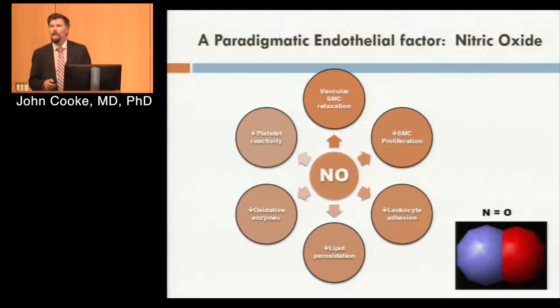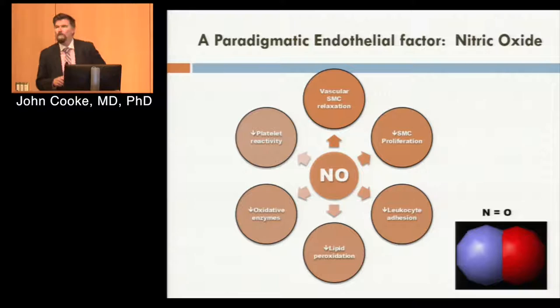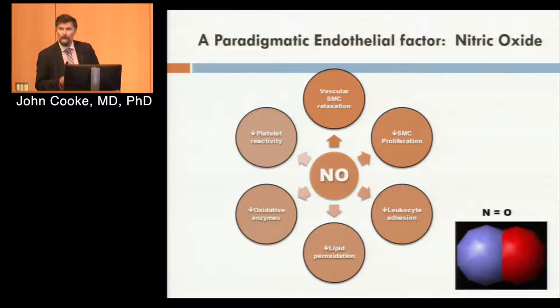Nitric oxide was first discovered as a vasodilator, and in 1992, three American scientists won the Nobel Prize for its discovery and characterization. But it turns out nitric oxide has many other effects on the vessel wall. It inhibits leukocyte adhesion by preventing the expression of adhesion molecules and chemokines. It prevents lipid peroxidation by reducing expression of oxidative enzymes, inhibits platelet adherence and aggregation, and antagonizes smooth muscle cell proliferation. Indeed, endothelium-derived nitric oxide is an anti-atherogenic molecule — a proposal I made many years ago, and now there's plenty of evidence to support that hypothesis.